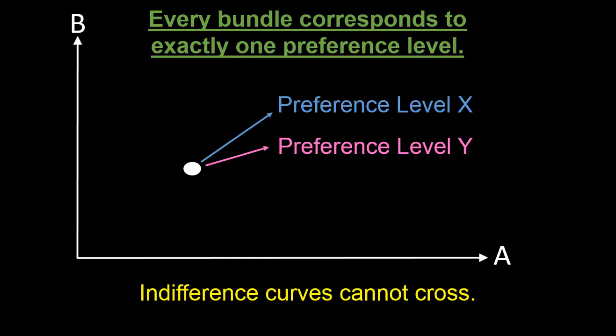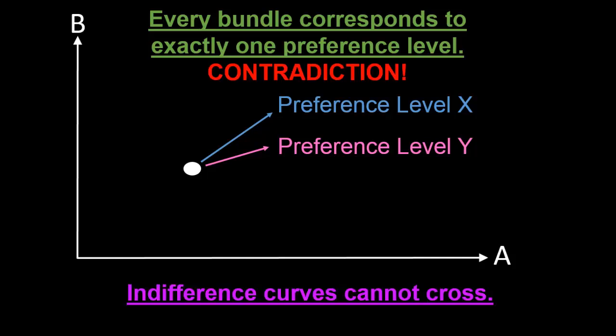And so all together, we've arrived at a contradiction. Our conclusion is that indifference curves can never cross.